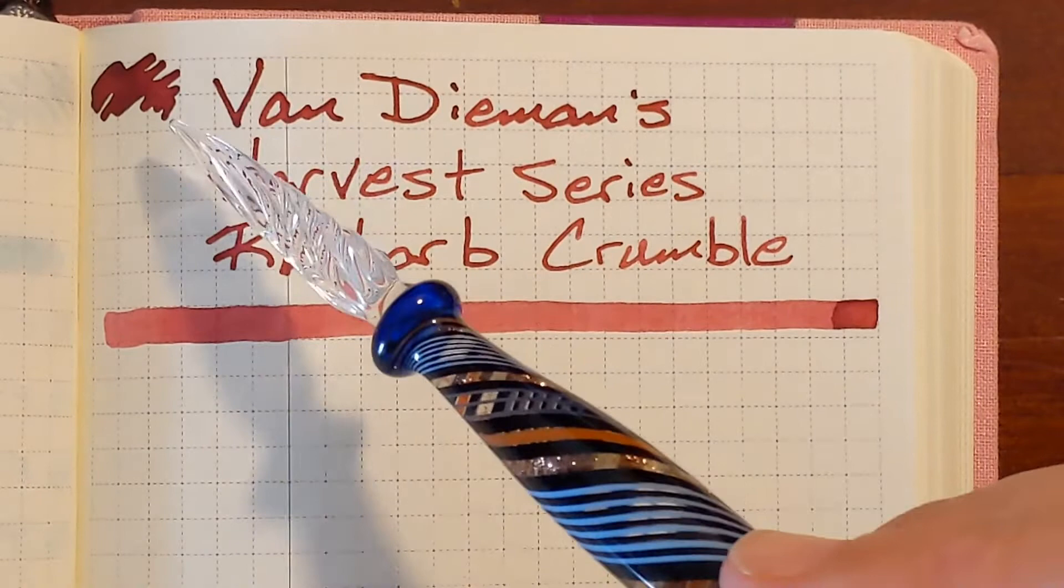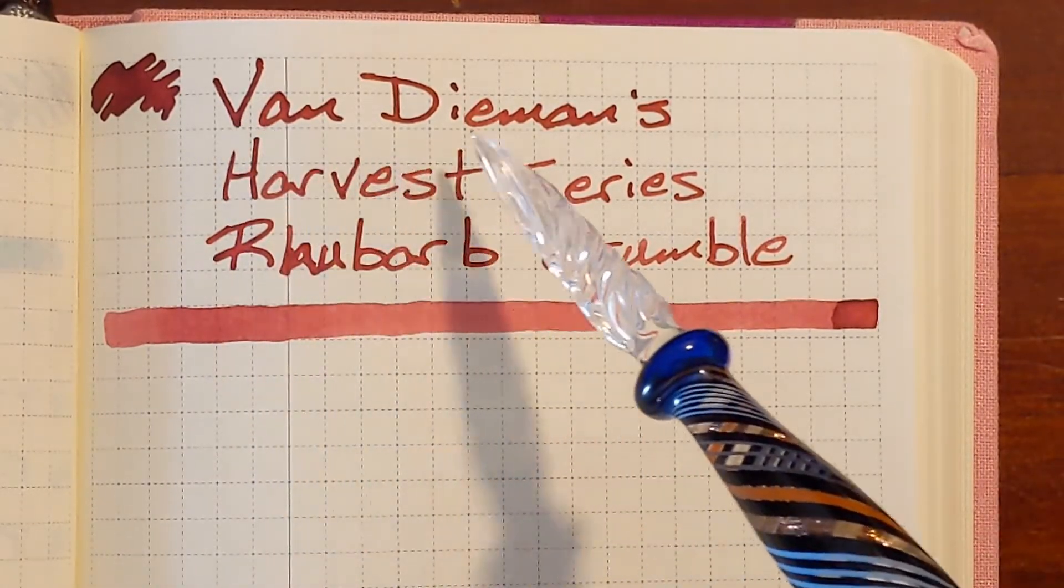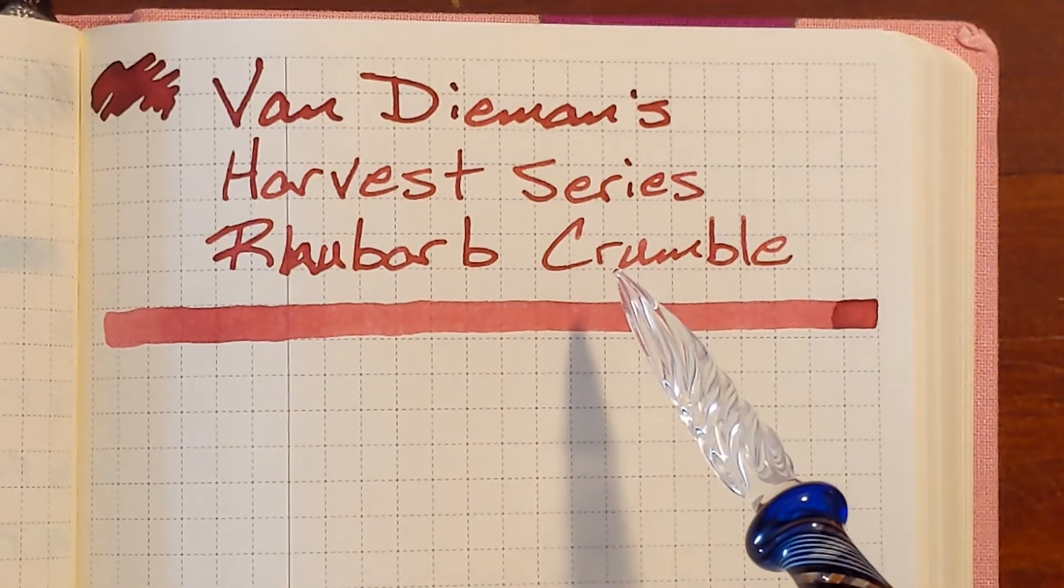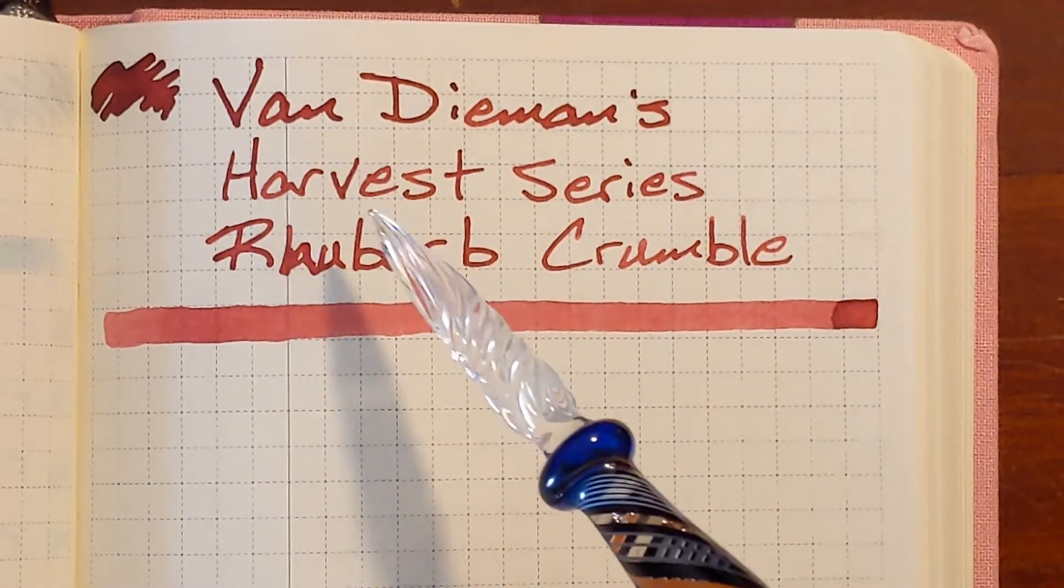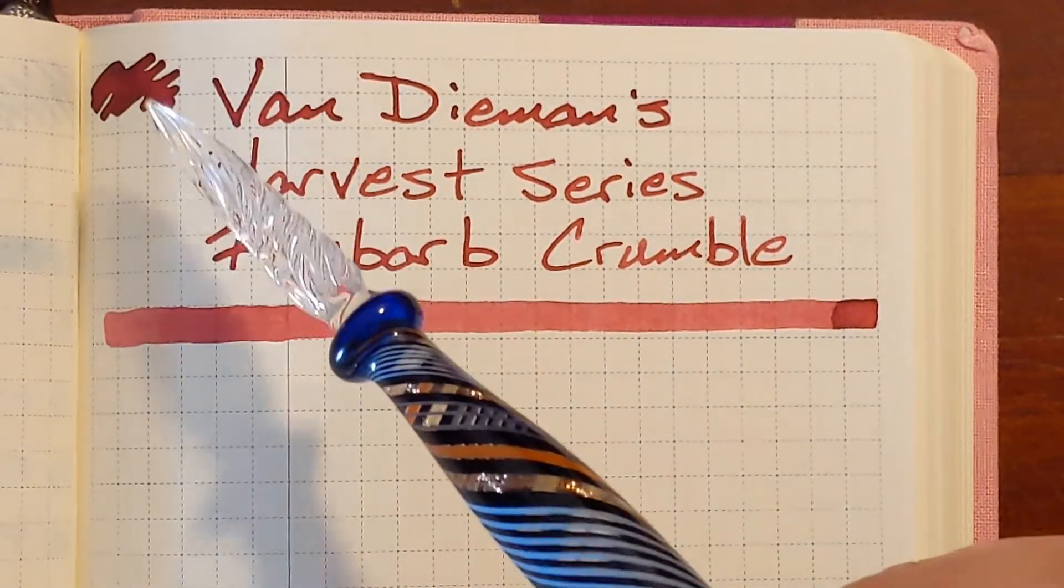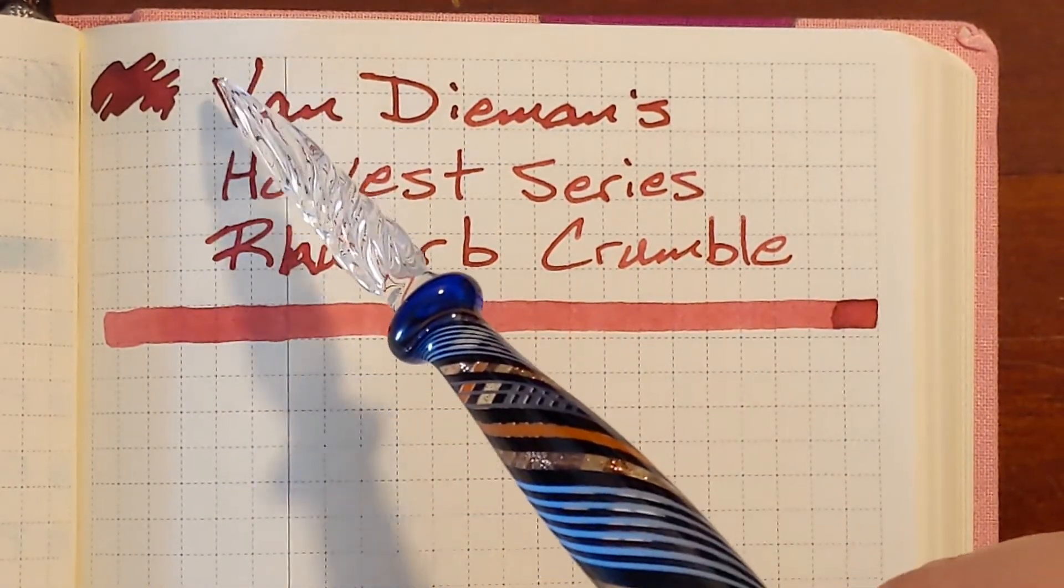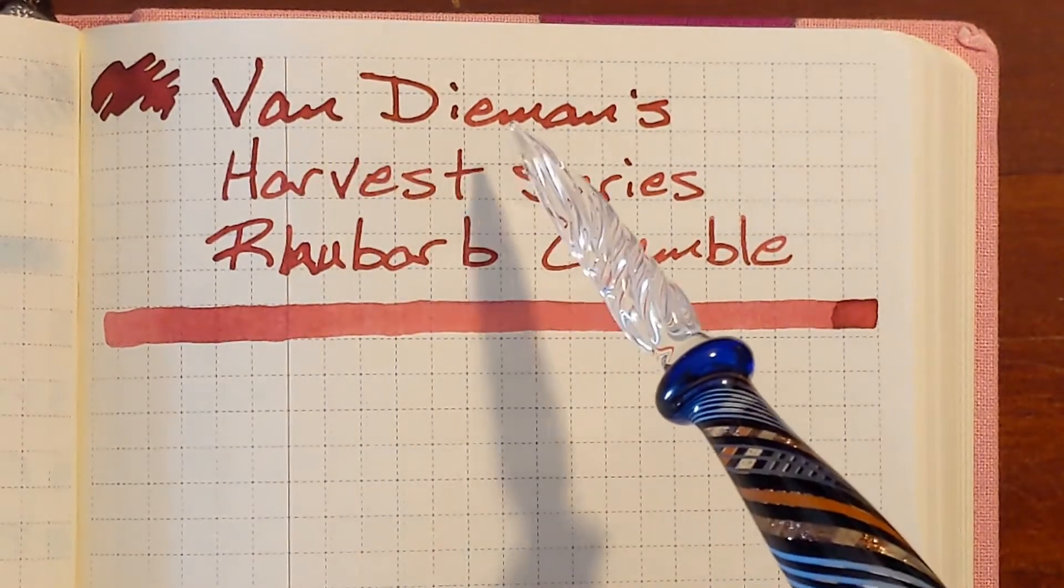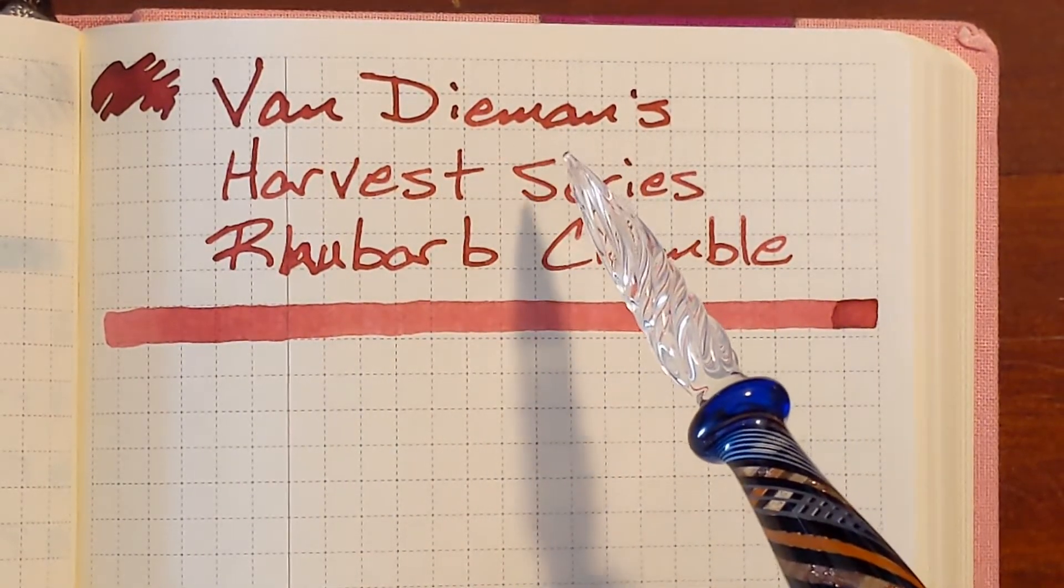The first writing sample was done with my glass dip pen and the ink came off the nib very uniformly. It was pleasant to write with and there doesn't seem to be much shading but like you can see in the scribble there seems to be like a dark halo around the writing that looks very nice.